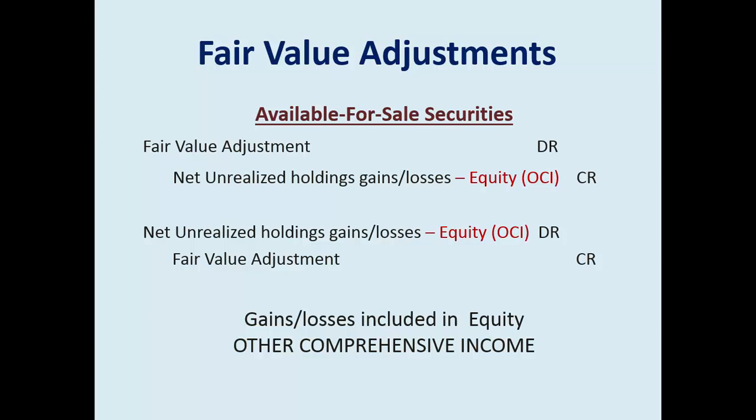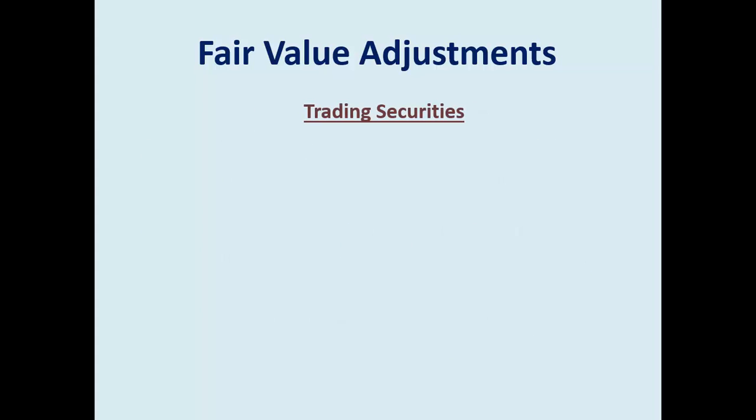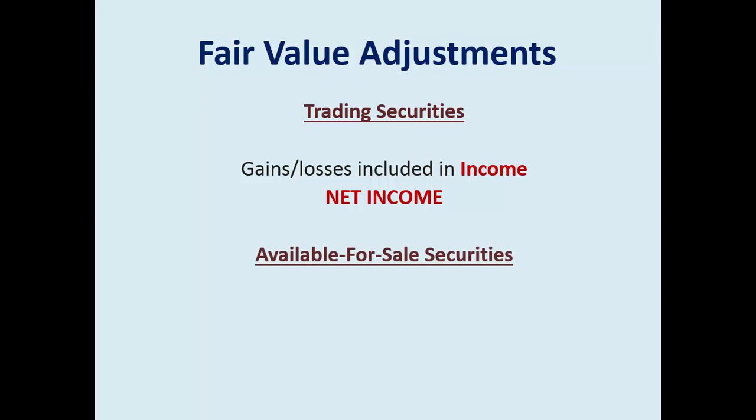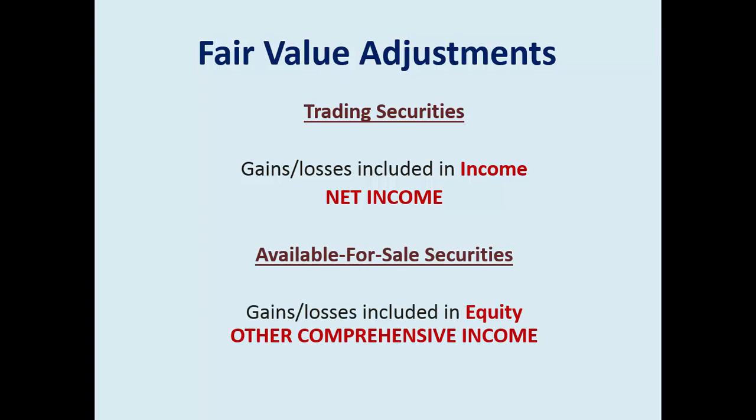The key to remember: unrealized gains and losses on trading are included in net income, which then closes to retained earnings. For available for sale, those unrealized gains and losses — those fair value adjustments — are recorded in equity in an account called other comprehensive income. If you're in a principles course, you'll probably just see the term equity; in intermediate accounting, you'll learn the detail of what other comprehensive income is.